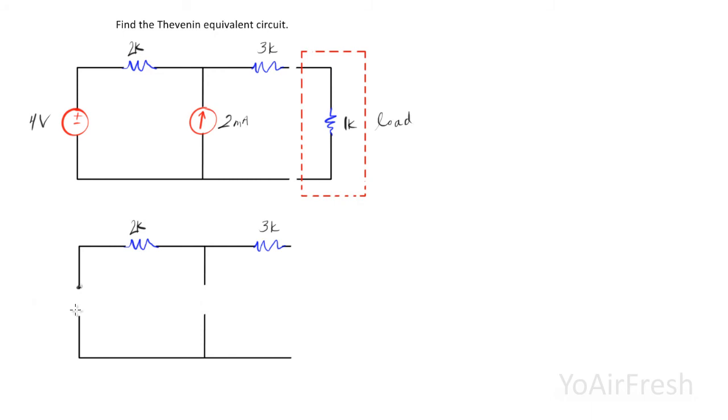And the current source becomes an open circuit, so this stays disconnected, and our Thevenin, or the Thevenin equivalent, whichever you call it, is going to be right here.